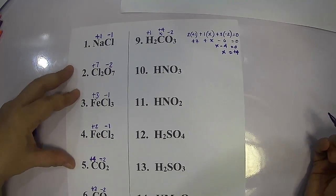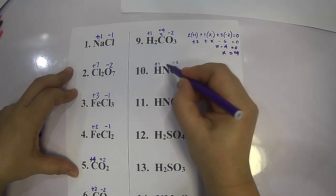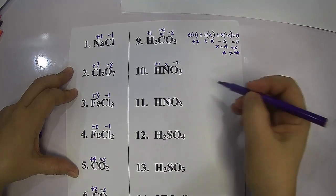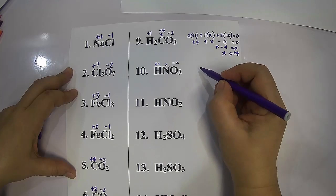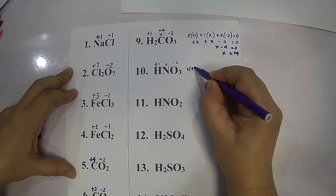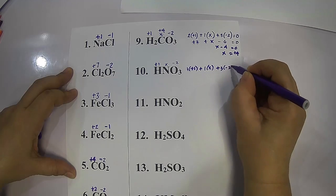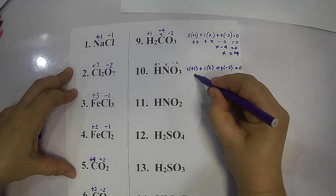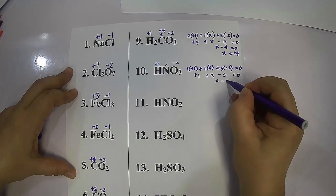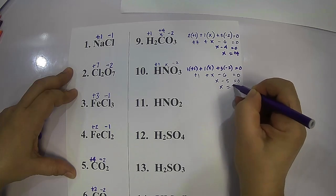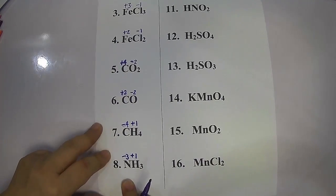For nitric acid (HNO₃), hydrogen is positive one and oxygen is negative two. Letting nitrogen equal x: one times positive one plus one times x plus three times negative two equals zero. Positive one plus x minus six equals zero, so x minus five equals zero, therefore x equals positive five. Nitrogen in nitric acid is positive five.